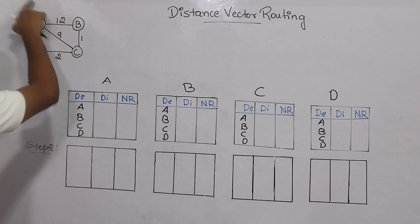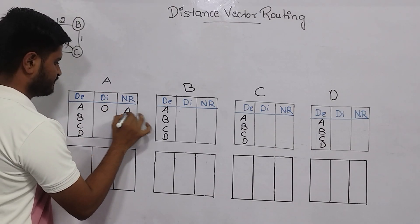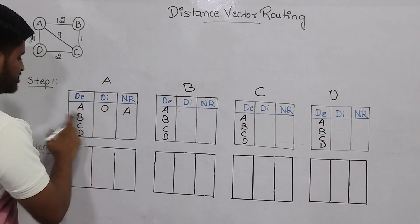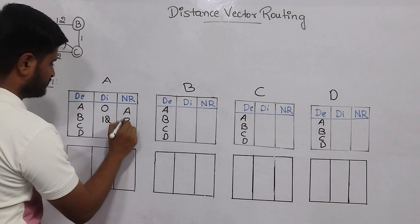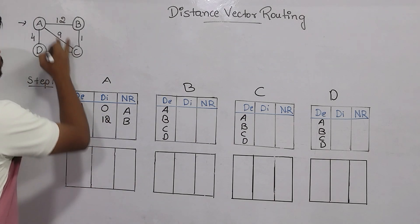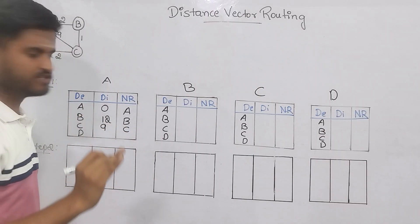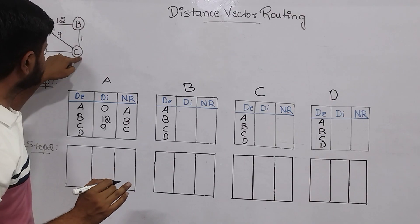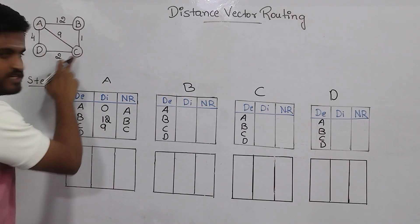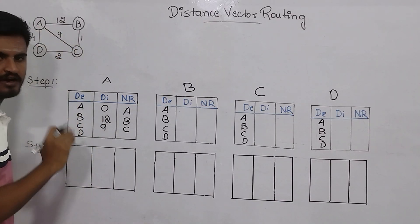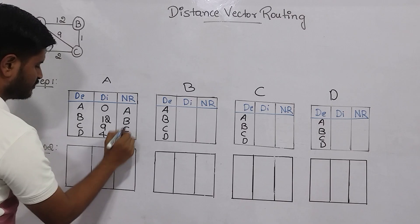From A to A, there is no cost. So the distance will be 0 and you remain at A. From A to B, the distance is 12 and the next router is B. From A to C, the distance is 9 and the next router is C — meaning you came from A and now stand at C. From A to D, it is 4, and you stood at D.